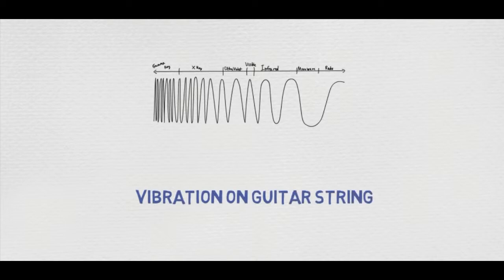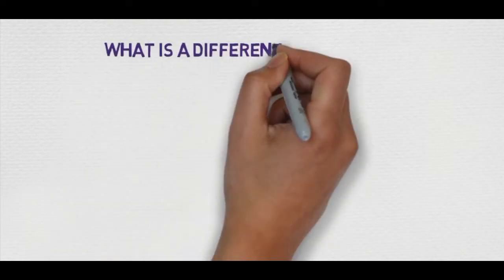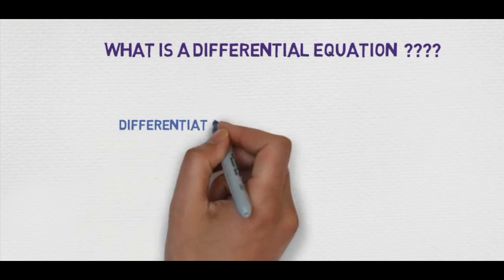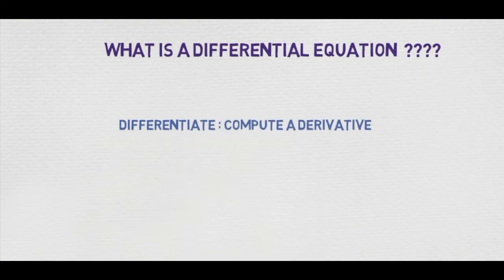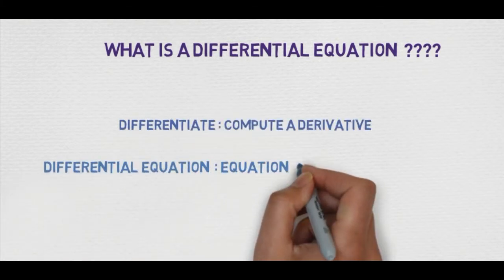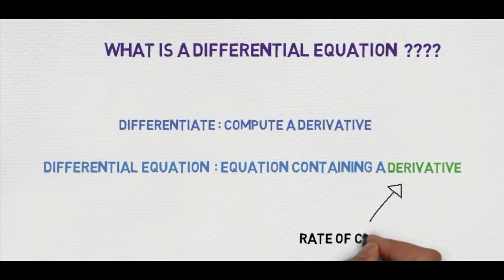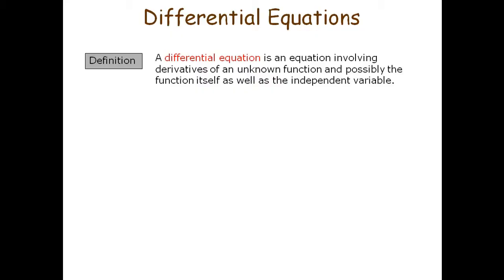Further applications include tumor growth, radioactive decay, air flow across plane wings, electrical circuits, planetary motion, and vibration on guitar strings. Now, what is a differential equation? From calculus, we know that differentiate means compute a derivative, and one definition of a differential equation is an equation containing a derivative. This derivative can explain rate of change.